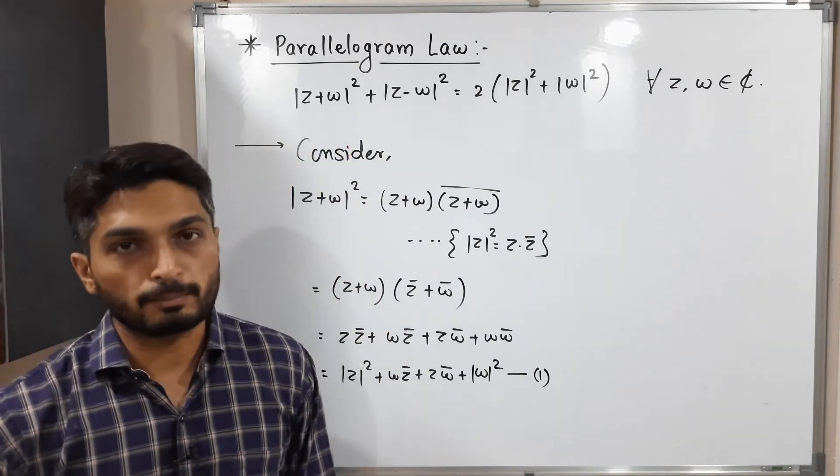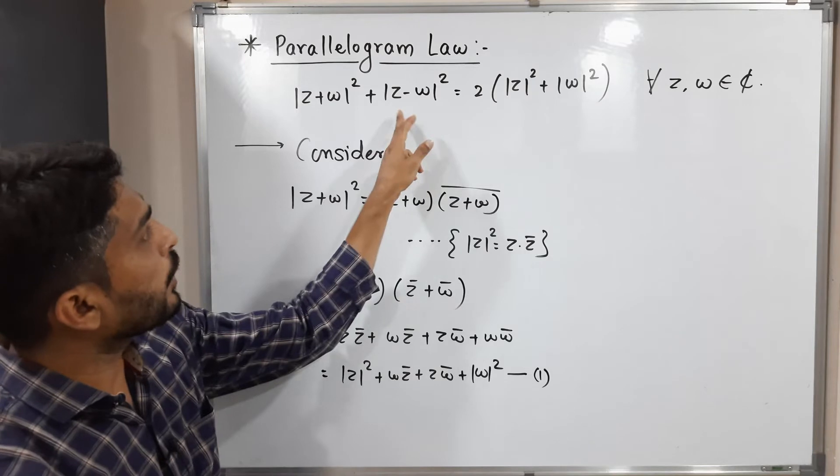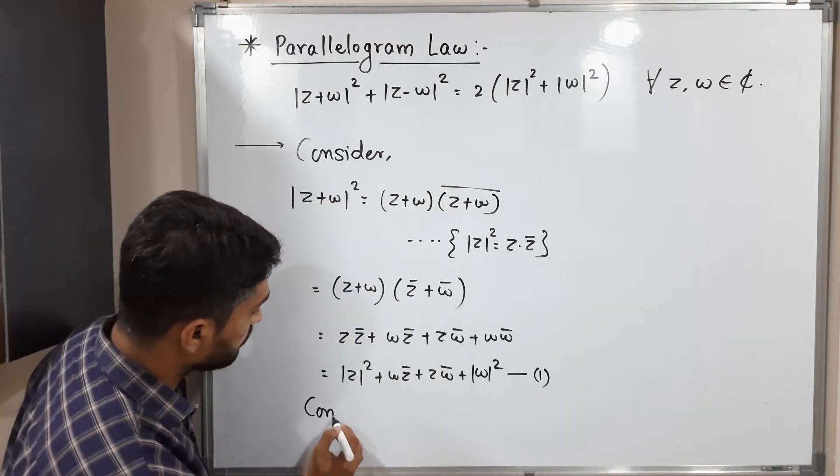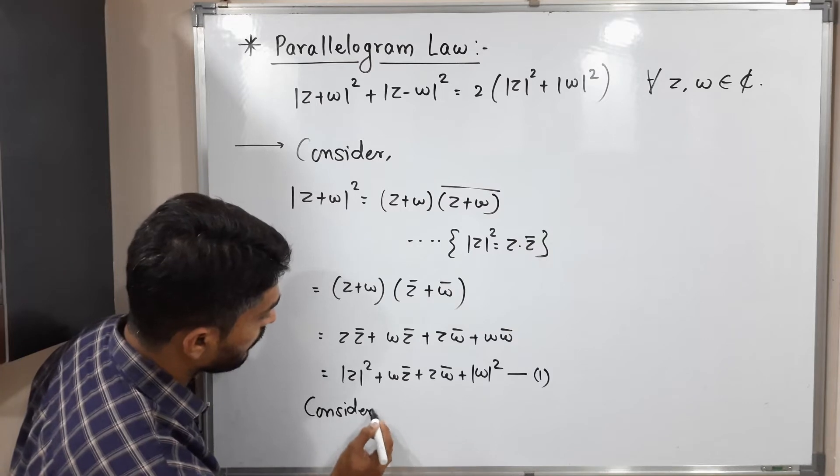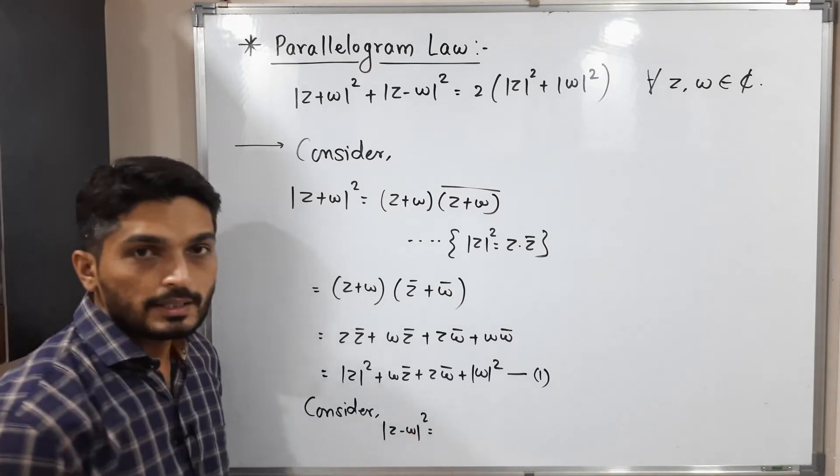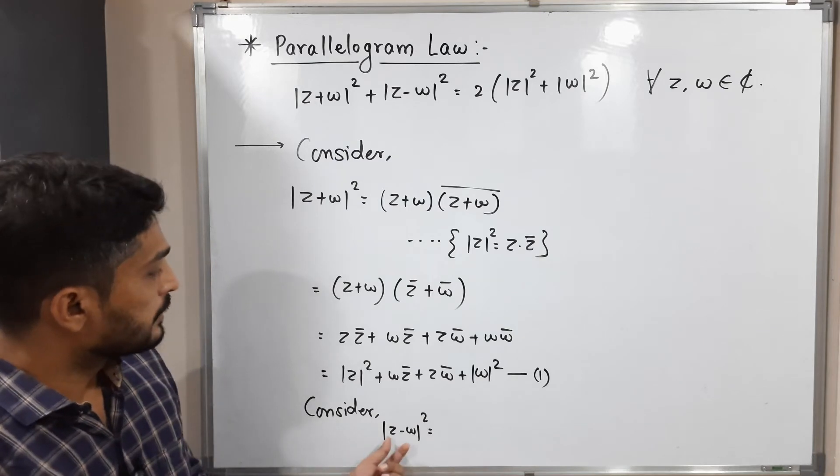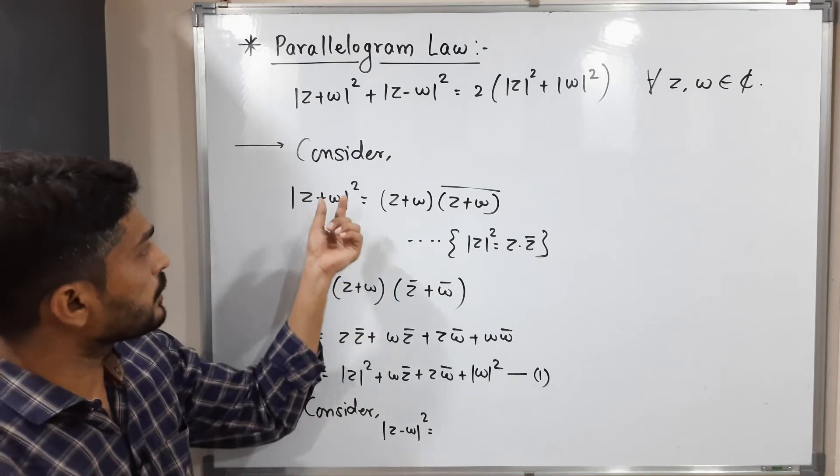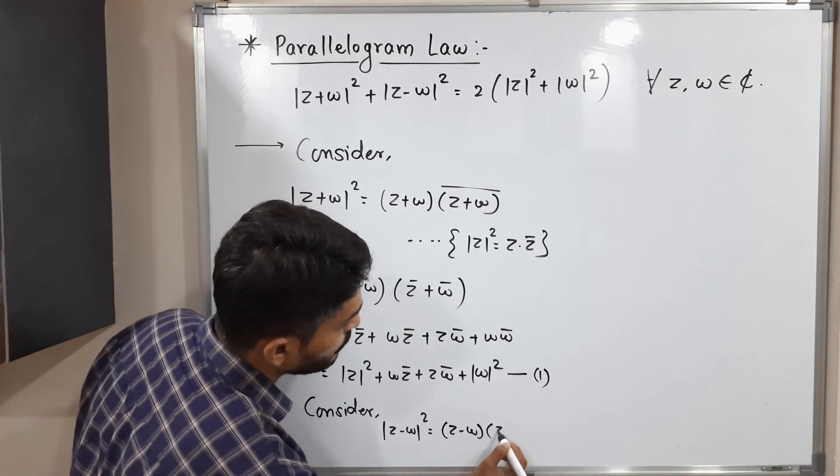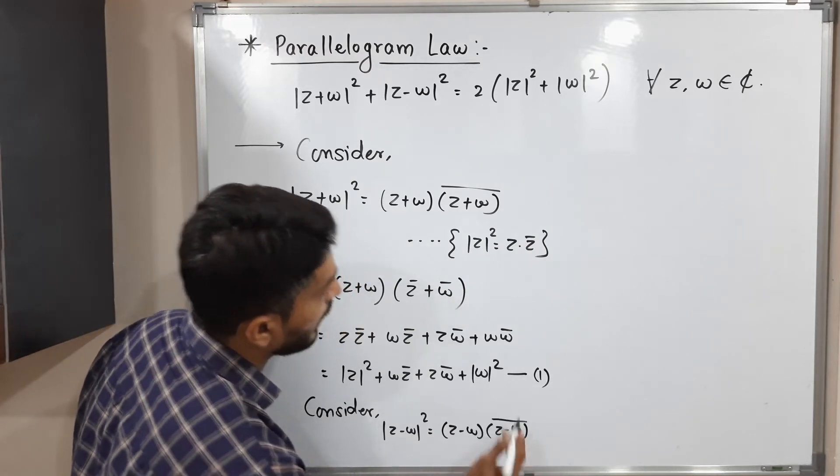Okay, so let us focus on the second term now. What is second term we have? Mod z minus w square. Let me consider. Consider mod z minus w square. See, I will do the same thing. See, mod square, getting mod square, that is nothing but that term z minus w into its conjugate z minus w bar. Same result I am using.